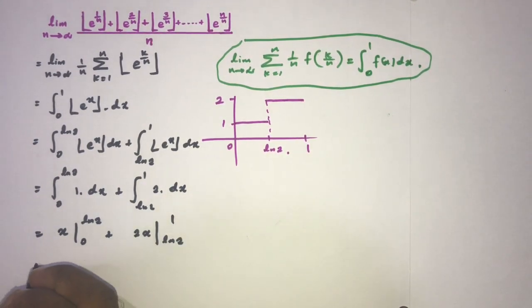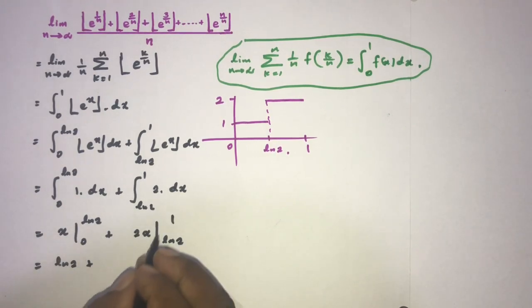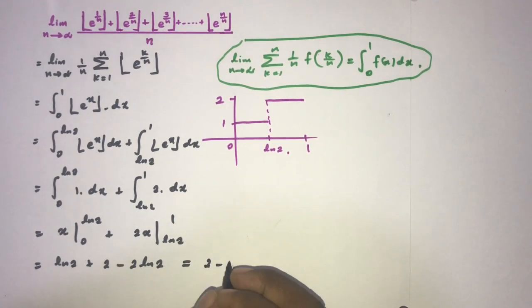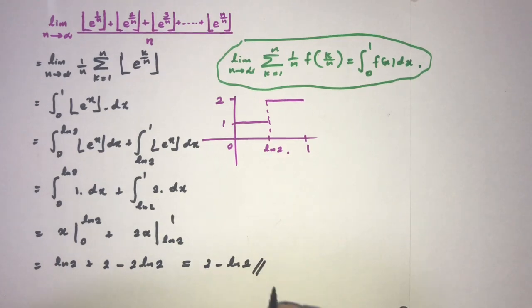Okay, then we can plug in values. So here natural log of 2 plus here 2 minus 2 times natural log of 2. So if we simplify this, we get 2 minus natural log of 2. Okay, this is the answer.